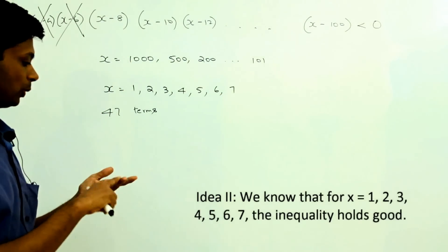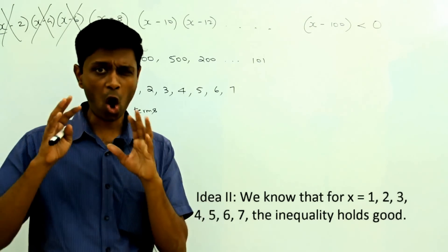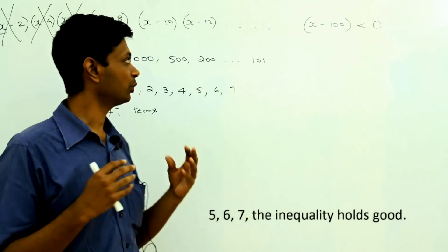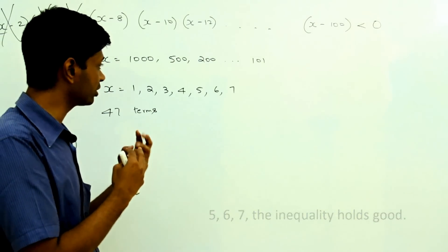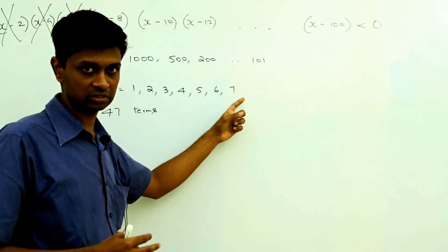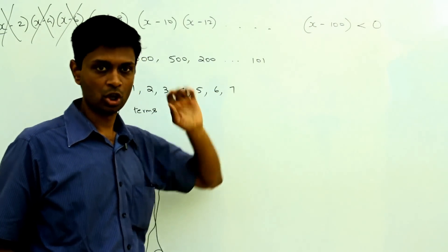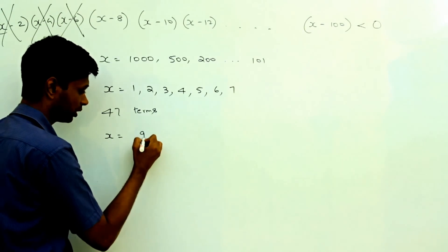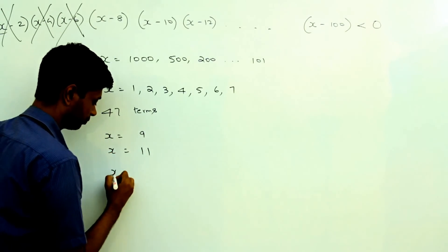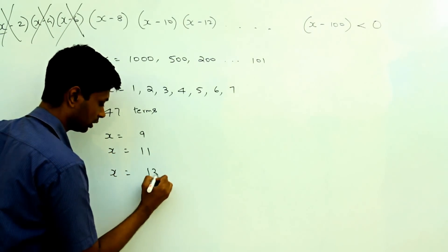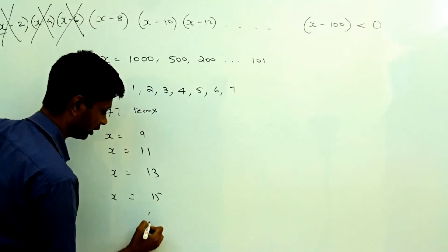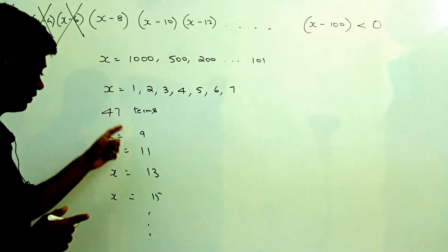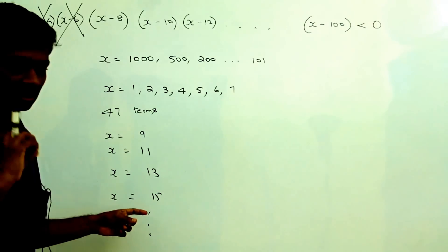Now 8, 10, 12, 14, all the way to 100 will give product 0. So I need to worry about only odd numbers greater than 7 and less than 100. So I am looking at numbers like x equal to 9, 11, 13, 15, and so on — these are all I need to worry about.